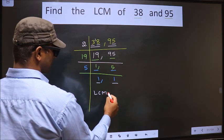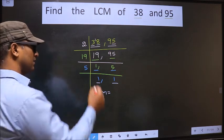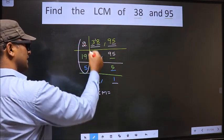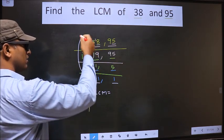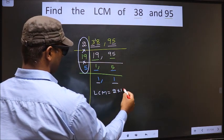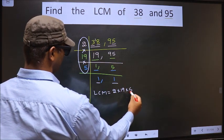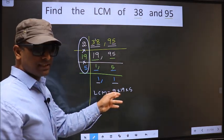So our LCM is... LCM is the product of these numbers. Okay, product of these numbers. That is 2 into 19 into 5. Now let us multiply these numbers.